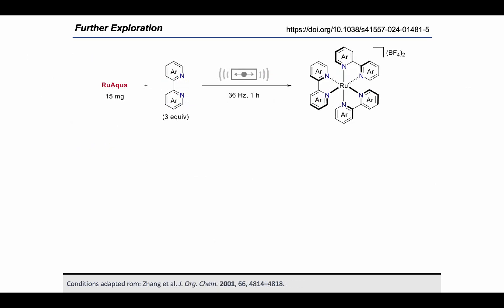We then began to consider other potential uses of RuAqua. You might remember that its structure is fairly simple, containing a mixture of nitrile and water ligands that can be easily removed. Because of this, we started to wonder if we could use RuAqua as a starting material in the synthesis of other complexes. An efficient way that we found to do this was using mechanochemistry, and we used this to make a range of derivatives of ruthenium trisbpy, which is a commonly used photocatalyst.